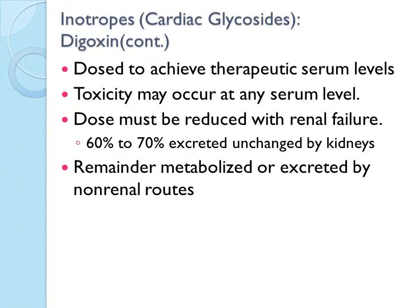Another form of digitalization is slow digitalization, accomplished by starting therapy with a maintenance dose of digoxin. Digitalization with a maintenance dose will reach therapeutic effects in approximately one week. The therapeutic serum digoxin level is 0.8 to 2.0 ng/mL. The serum blood level is drawn prior to administration of the digoxin dose, at least six hours after the previous dose, because distribution of digoxin to the tissue requires about six hours. If blood is drawn before six hours, the serum digoxin level may be falsely elevated.